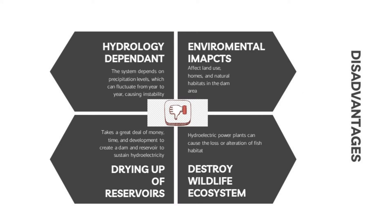Alongside advantages, there are also disadvantages. First is hydrology dependent: the system depends on precipitation levels which can fluctuate from year to year, causing instability. Second is environmental impact, affecting land use, homes and natural habitats in the dam area. Third is the great deal of money, time and development required to create the dam. Lastly, it can destroy wildlife ecosystems. Hydroelectric power plants can cause loss or attenuation of fish habitat.